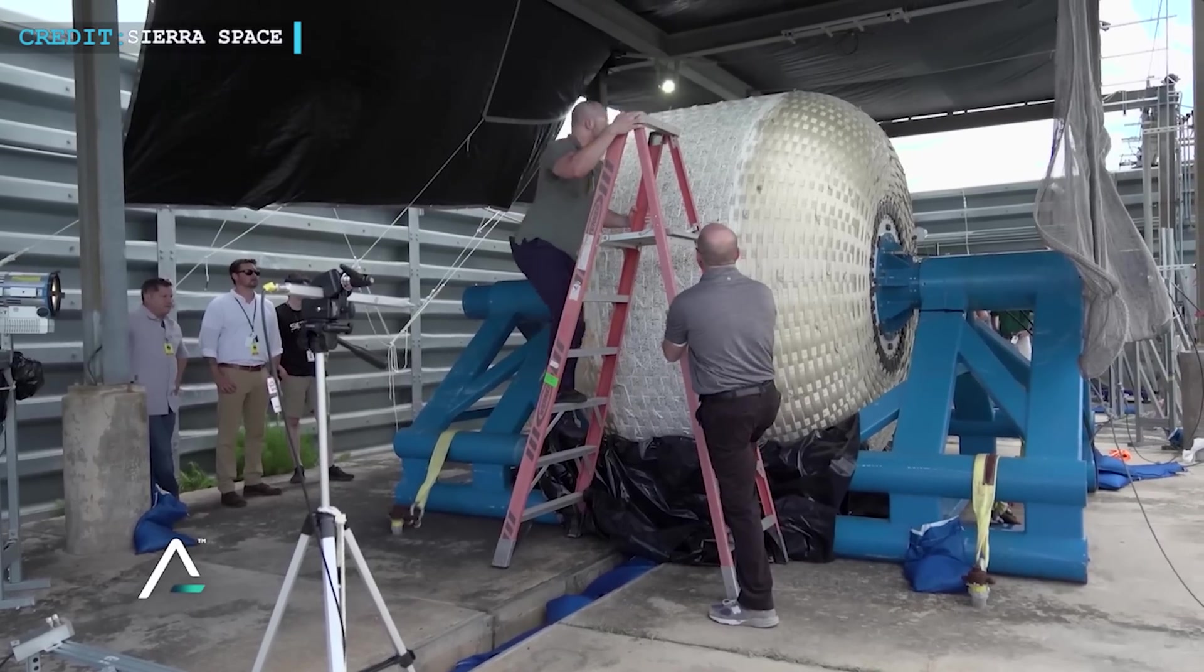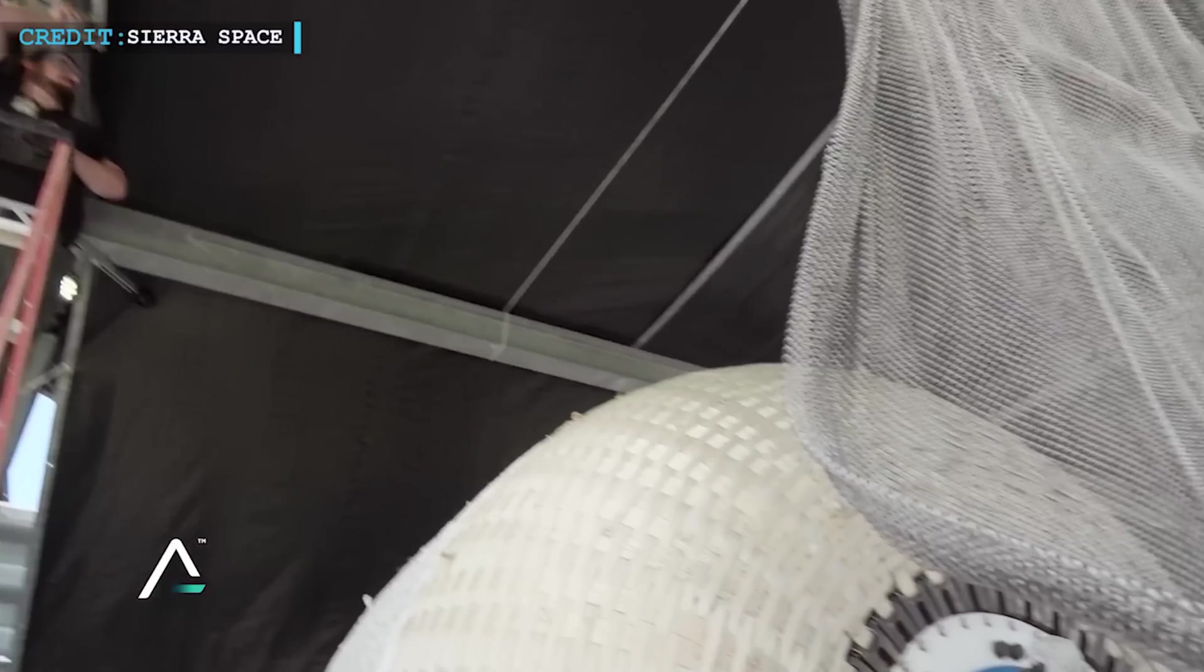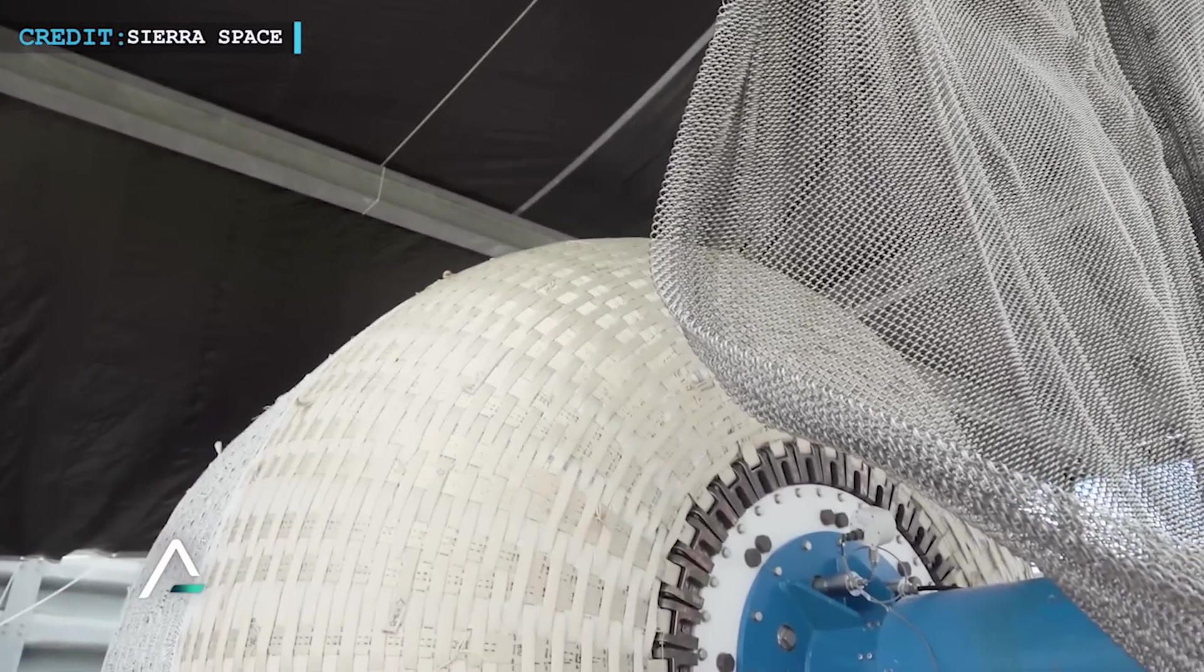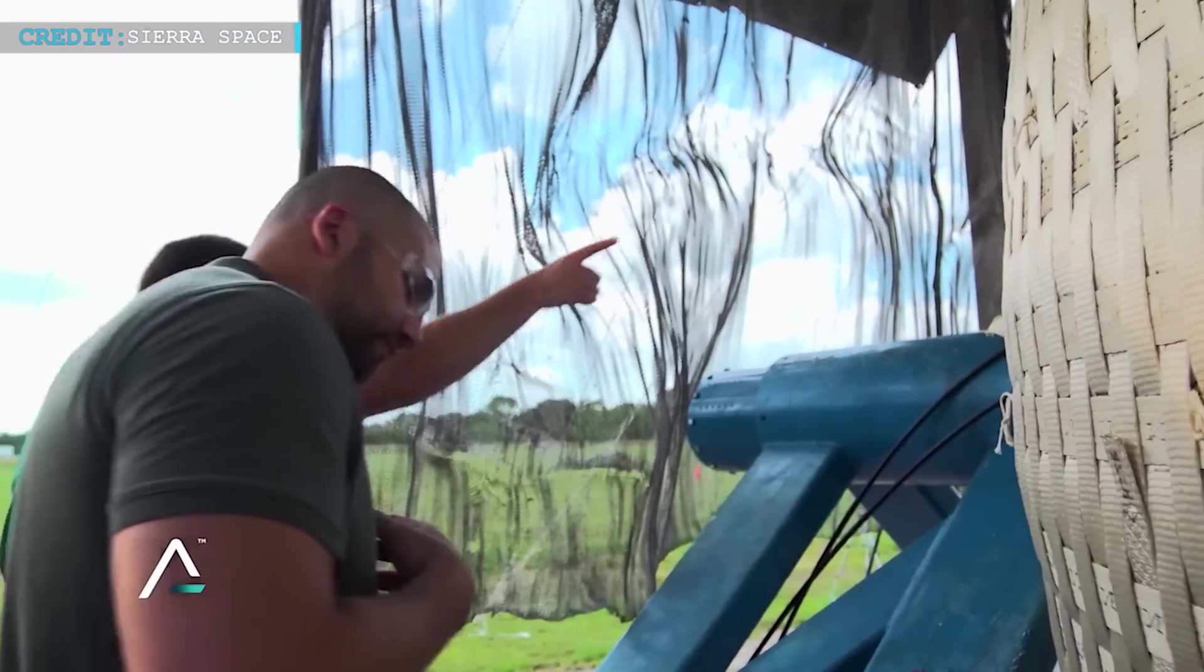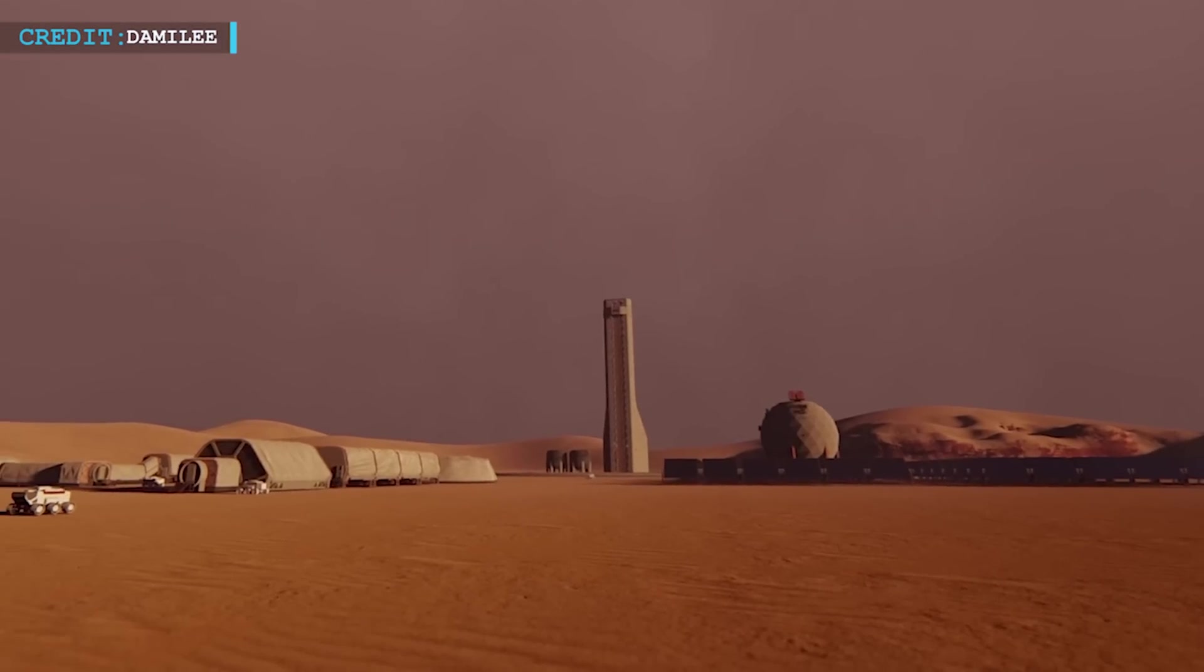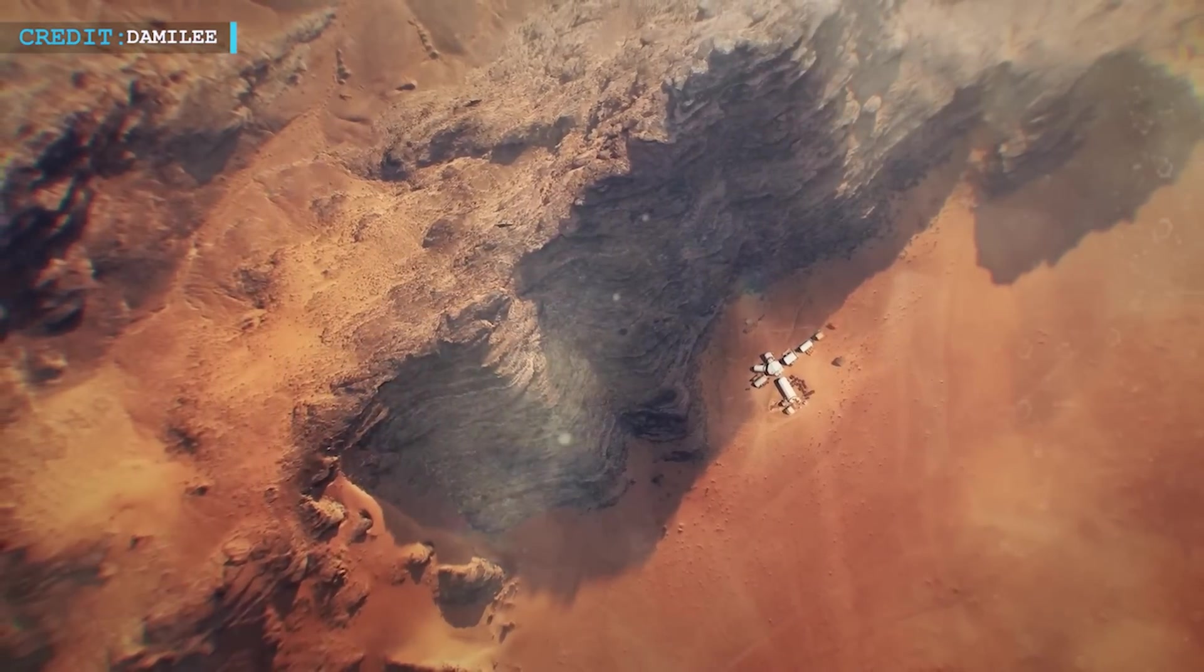Moreover, the design of inflatable habitats offers an additional safety feature. In the event of a puncture in the shell, explosive decompression would not occur, and any leaks could be addressed gradually. This further enhances the long-term viability and resilience of these habitats in the challenging Martian environment.